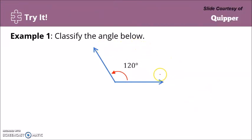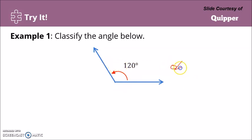Example: classify the angle below. The angle measures 120 degrees. Since 120 degrees is more than 90 degrees but less than 180 degrees, this is an obtuse angle.